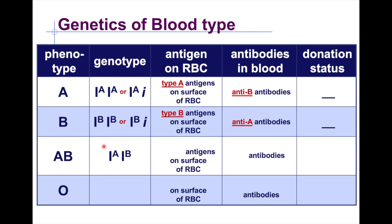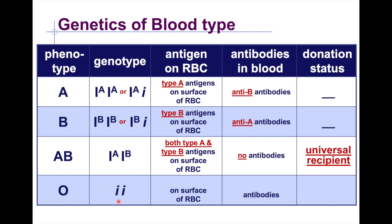For blood type AB, there is only one possible genotype. They will have antigens for both A and B, and because of that they do not have any antibodies — so you can donate any kind of blood to a blood type AB person; they are the universal recipient. Blood type O has no antigens on their blood cells, so they have both anti-A and anti-B antibodies. They can donate to anyone but can only receive blood from blood type O people.